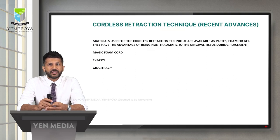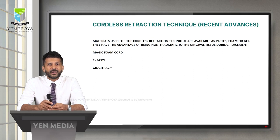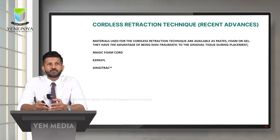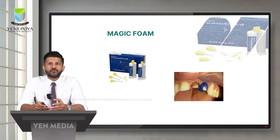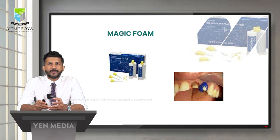As there is increased demand for more efficient and patient-friendly methods, cordless retraction techniques represent recent advances in gingival retraction. Materials used for cordless retraction are available as paste, foam, or gel, and have the advantage of being non-traumatic to the gingival tissue during displacement. Among the most popular materials available are Magic Foam, Expasyl, and Gingitrac. Magic Foam is based on polyvinyl siloxane with the ability to expand and displace the tissues once placed inside the gingival sulcus, used in combination with a compression cap that the patient bites on, achieving considerable retraction.